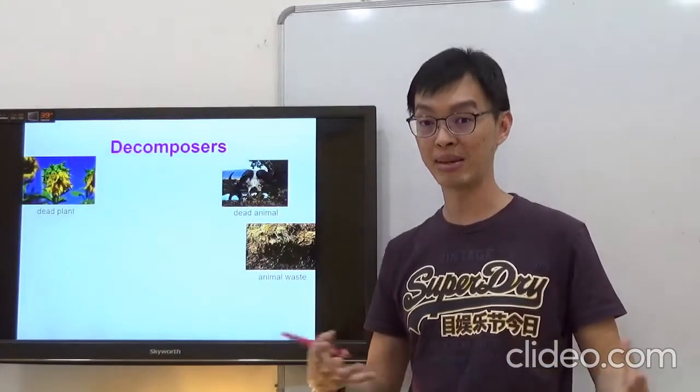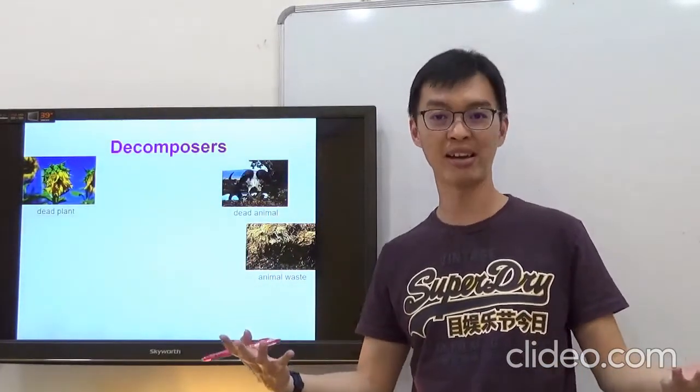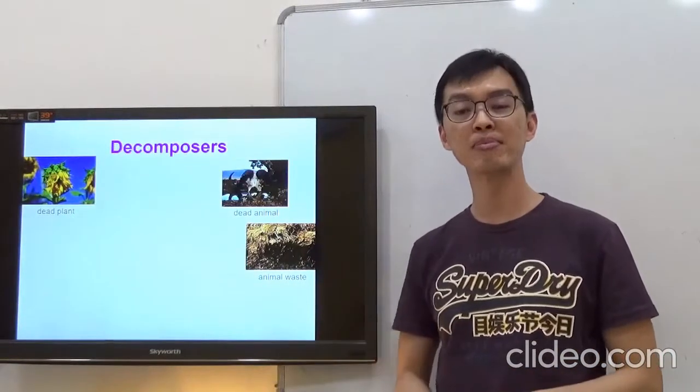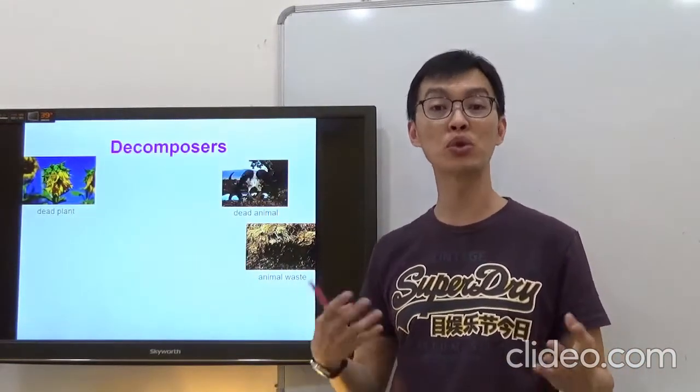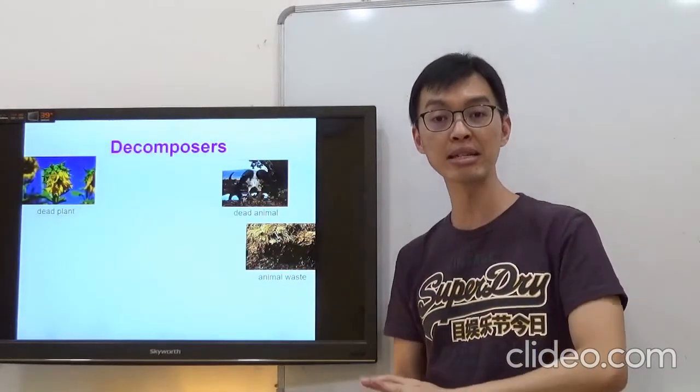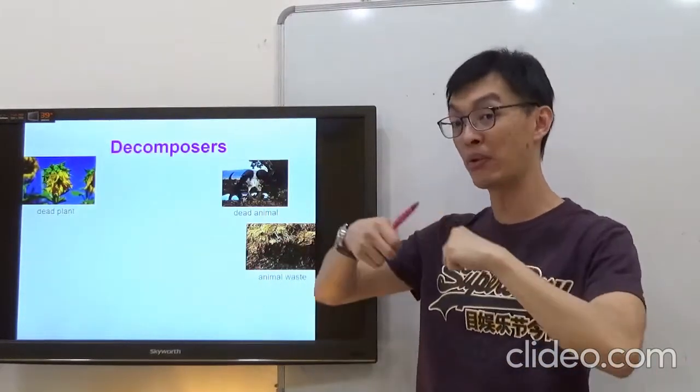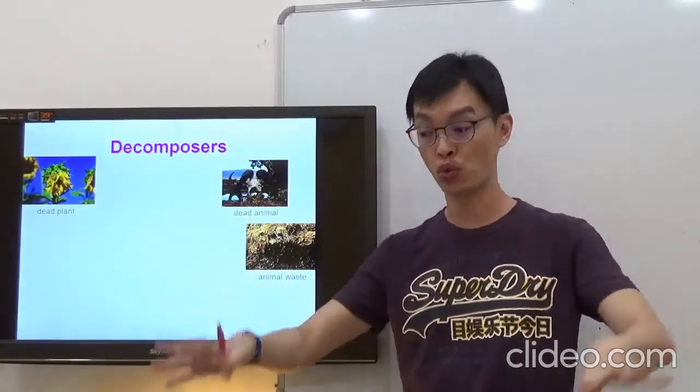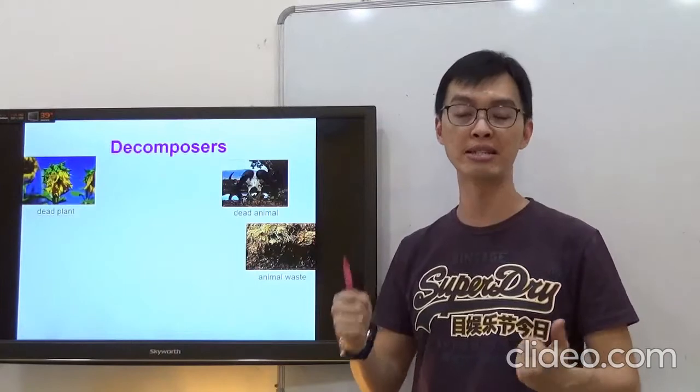So remember, decomposers refer to your fungi and bacteria. They are really important for helping us to break down dead matter. For example, a dead animal. The weak or the sickly animal dies. Now, they are just left there to die. But the decomposers will do the job to break them down into simpler substances. And these simpler substances will then be returned back into the soil to allow the plants to receive the nutrients to grow better.